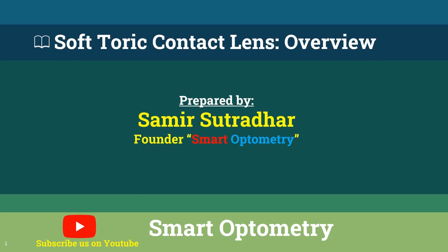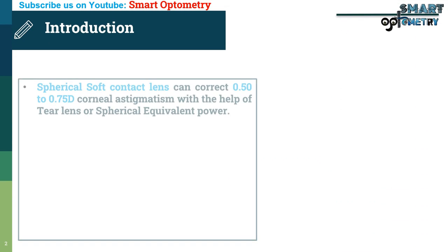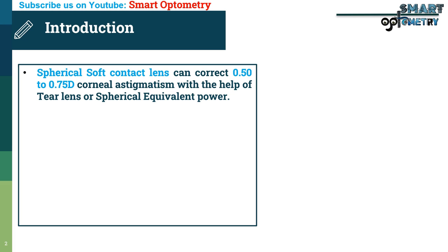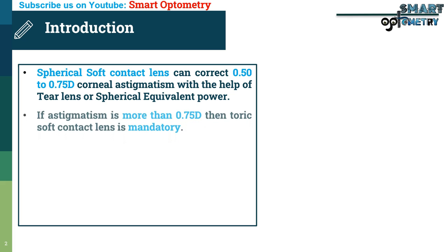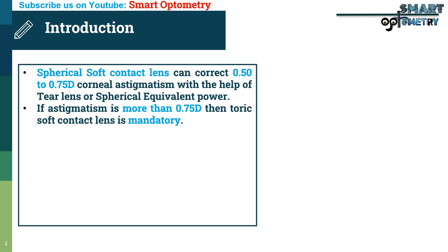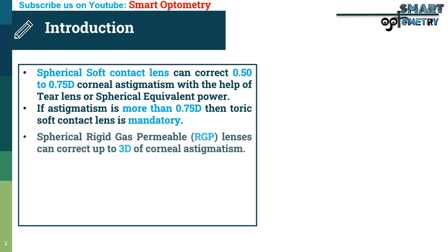Today I will discuss soft toric contact lenses. Spherical soft contact lenses can correct 0.5 to 0.75 diopter corneal astigmatism with the help of a tear lens or spherical equivalent power. If astigmatism is more than 0.75 diopter, then toric soft contact lenses are mandatory.